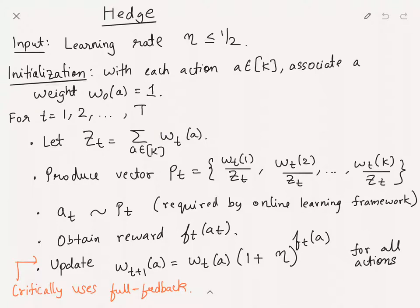Critically, to update this weight, note that you need the full feedback since you're updating it for all actions. You need to know what ft(a) is for every action. This is the part of the algorithm where we're using the full feedback version. This is essentially the main idea: you maintain the cumulative exponential of the weight where the base is one plus eta.